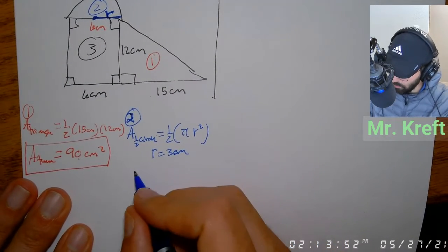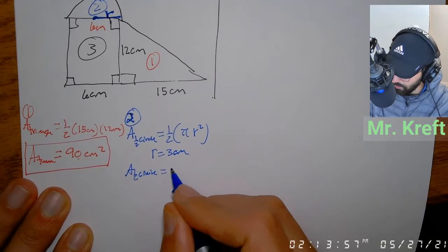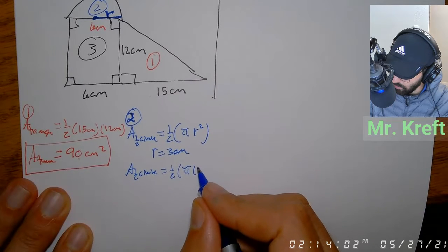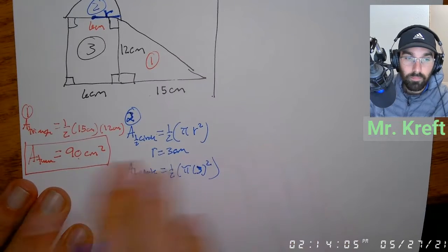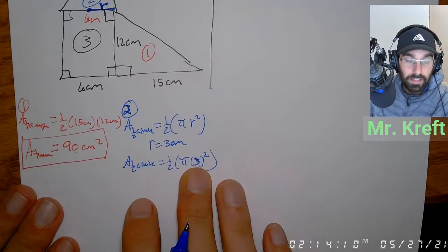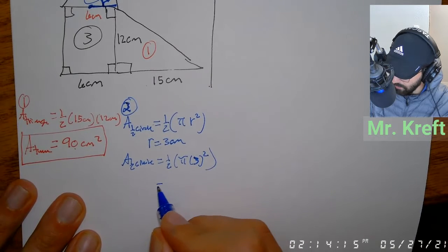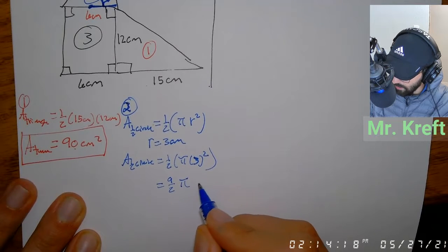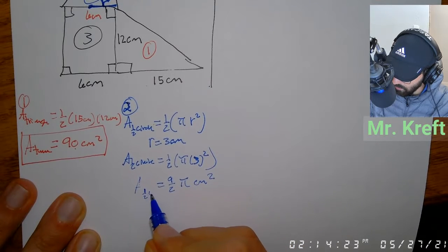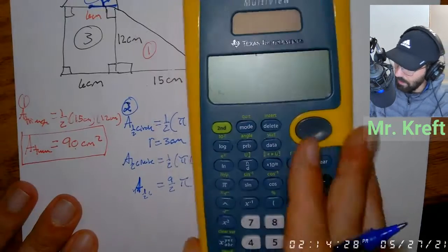Knowing that our radius is three centimeters, the area of a half circle — also called a semicircle — is one-half times pi times three squared. Three squared is nine, so that gives us nine-halves times pi, centimeters squared. This is my exact answer.